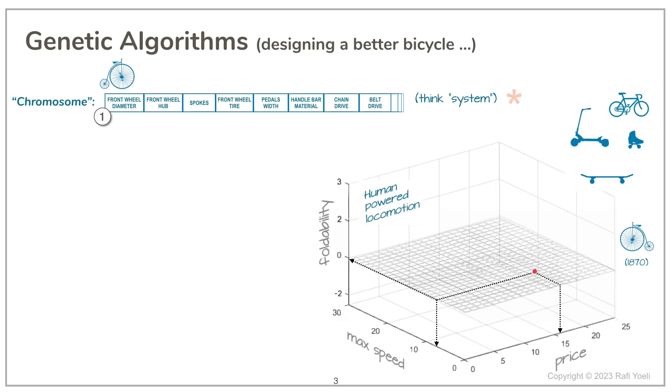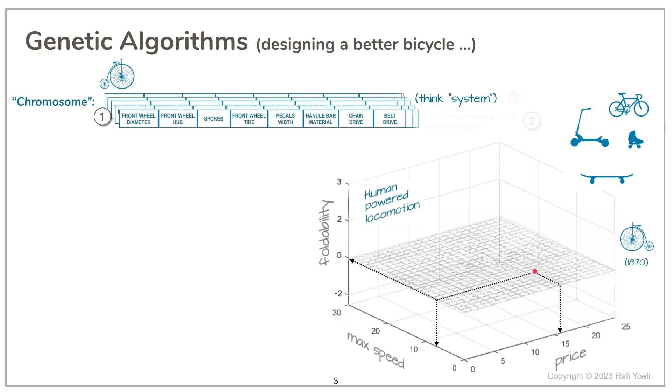In step 2, the genetic algorithm clones this chromosome a few times and creates a population, which John Holland called individuals, all based on the same chromosome. But if we don't make any changes, all that we would see is more dots piling up over the one we have with our baseline solution.